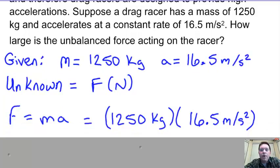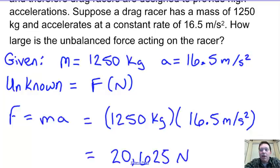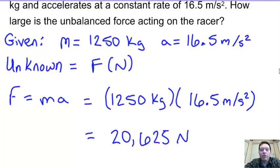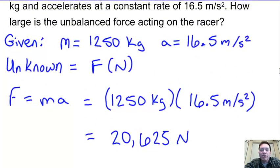Force equals mass times acceleration. Plugging in 1,250 kilograms and 16.5 meters per second squared, I multiply the two numbers and get a value of 20,625 Newtons.